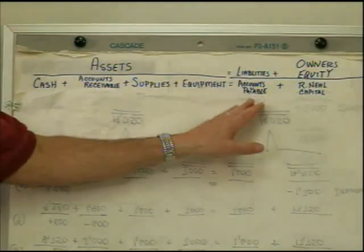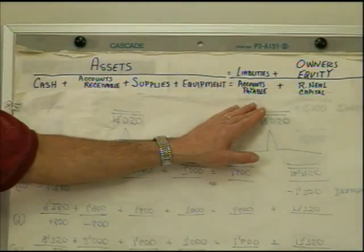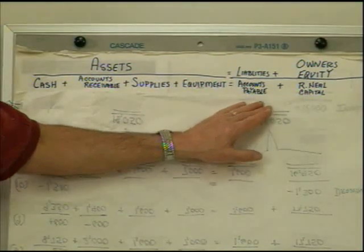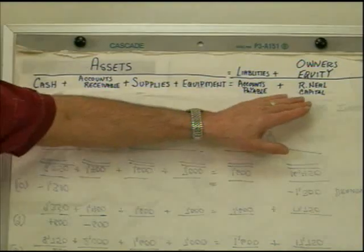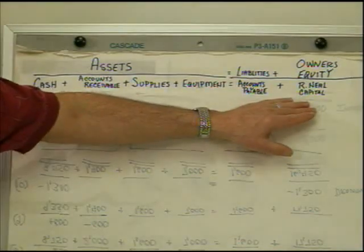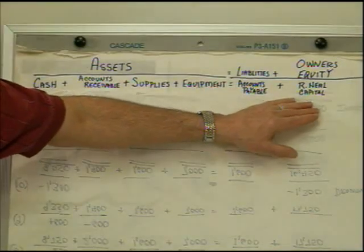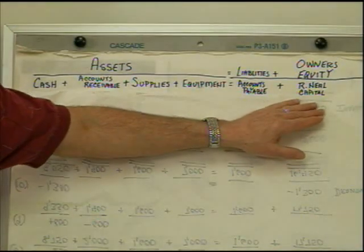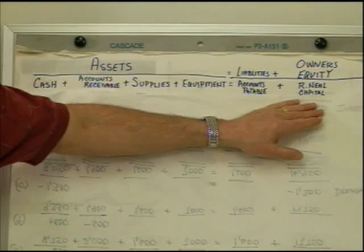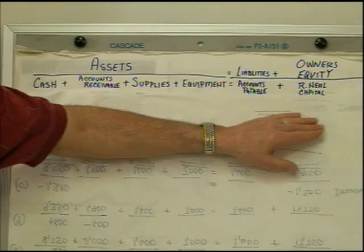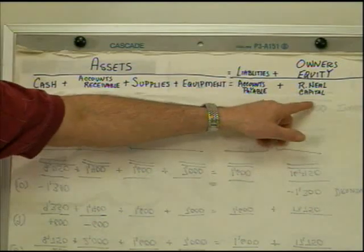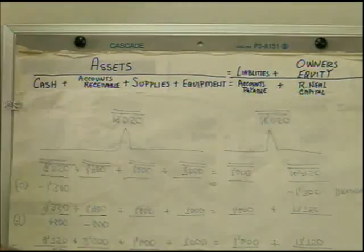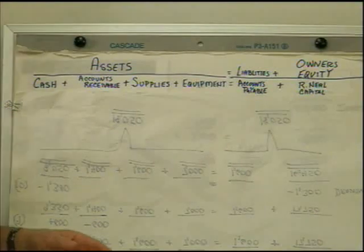Under liabilities, in this example we have accounts payable. Under owner's equity, we have what's called R. Neal Capital. When an owner puts money in, we actually call it their capital account. So let's get started.